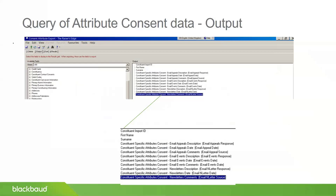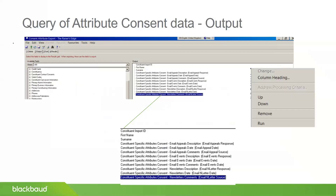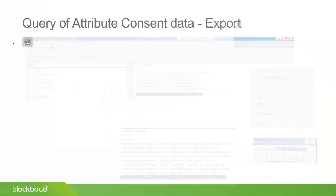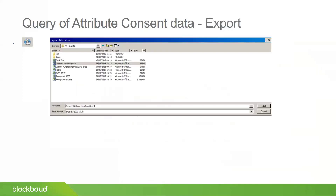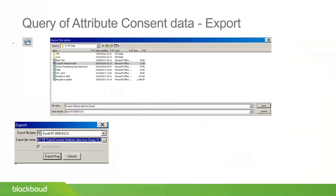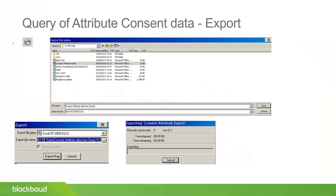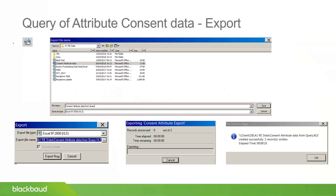To make mapping easier later, you can right-click over entries in the output and choose 'column heading' to rename them rather than having the long attribute description. For example, I've renamed one to 'email appeals response,' which makes it much easier when mapping during import. Then I hit the export button, choose Excel as the format, name the file and set the save path, and run the export with 'export now.' I now have those two rows of data exported.